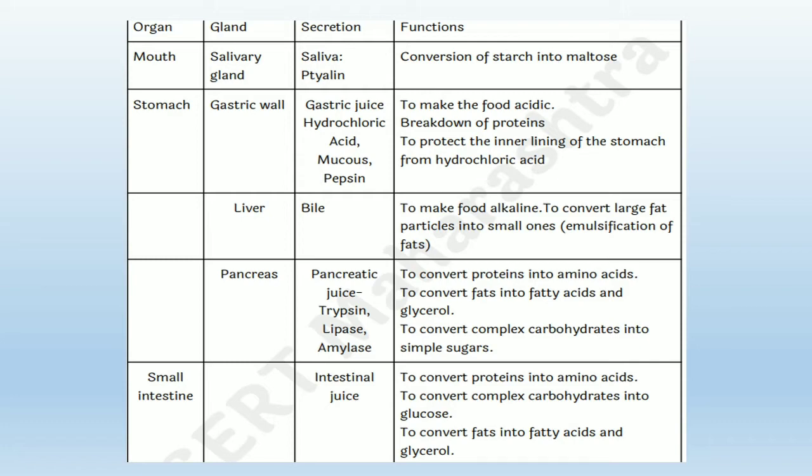Also in these organs there are glands which secrete some secretions for better performance of the digestive system. For example, in the mouth, the salivary gland is present, which secretes saliva. The pancreas secretes pancreatic juice, i.e., trypsin, lipase, amylase, etc.